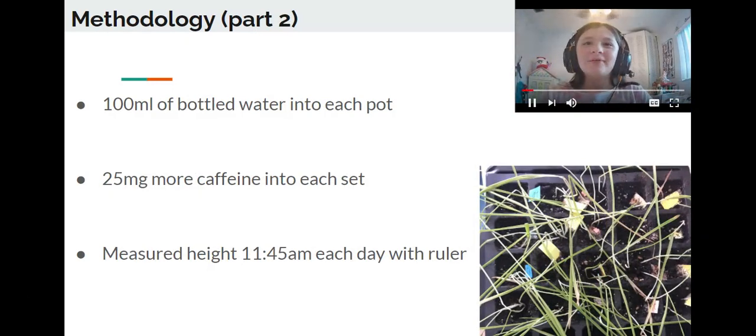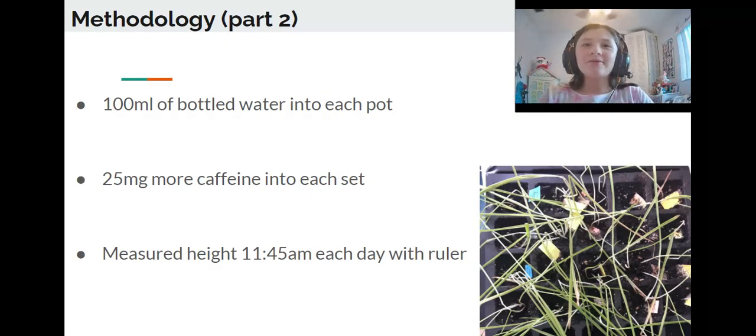Methodology Part 2. The researcher measured 500 milliliters of bottled water and poured 100 milliliters into each pot labeled 1A through 5A. The researcher then repeated the step with every other letter set, adding 25 more milligrams of caffeine into the 500 milliliters of water each time.